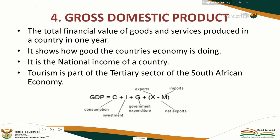It shows how well the country's economy is doing. Looking at the formula: consumption is how much consumers bought or paid for services and goods; investments is how much the industries invested; government expenditure is how much the government spent on infrastructure, transport, etc.; and you must also look at the surplus between exports and imports.